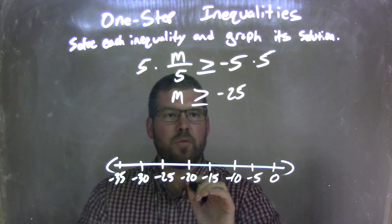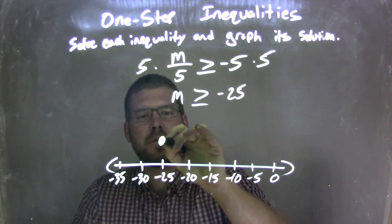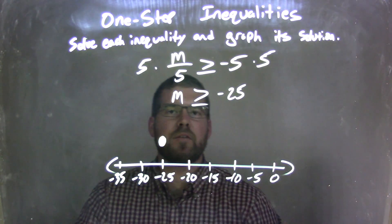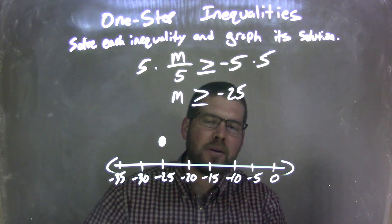What they told me is that m can equal negative 25. So I'm going to put a closed circle right there at negative 25. Then m is greater than that.